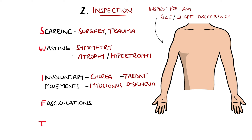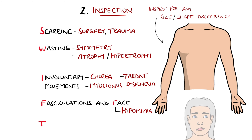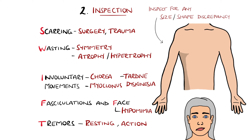F is for fasciculations — small, localised muscle contractions visible beneath the skin. I also include face here, looking for features like hypomimia, meaning a reduction in facial expression seen in patients with Parkinson's disease, as well as any drooping or asymmetry. The T is for tremors, which may be resting — meaning minimal during activity — or action tremors that become more apparent during particular movements.